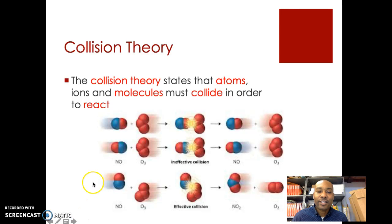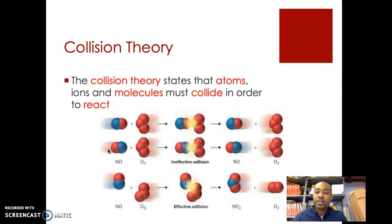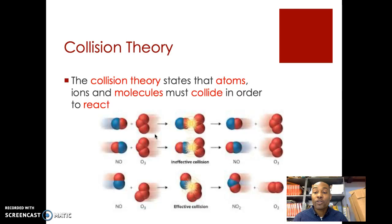You also have to have an understanding of collision theory. Collision theory states that atoms, ions, and molecules have to collide — they have to smash into each other — in order to react. This diagram is trying to show molecule A colliding with molecule B in order for the reaction to happen. There needs to be an effective collision, meaning they must smash into each other with the right amount of energy and the right orientation, otherwise the reaction won't happen.